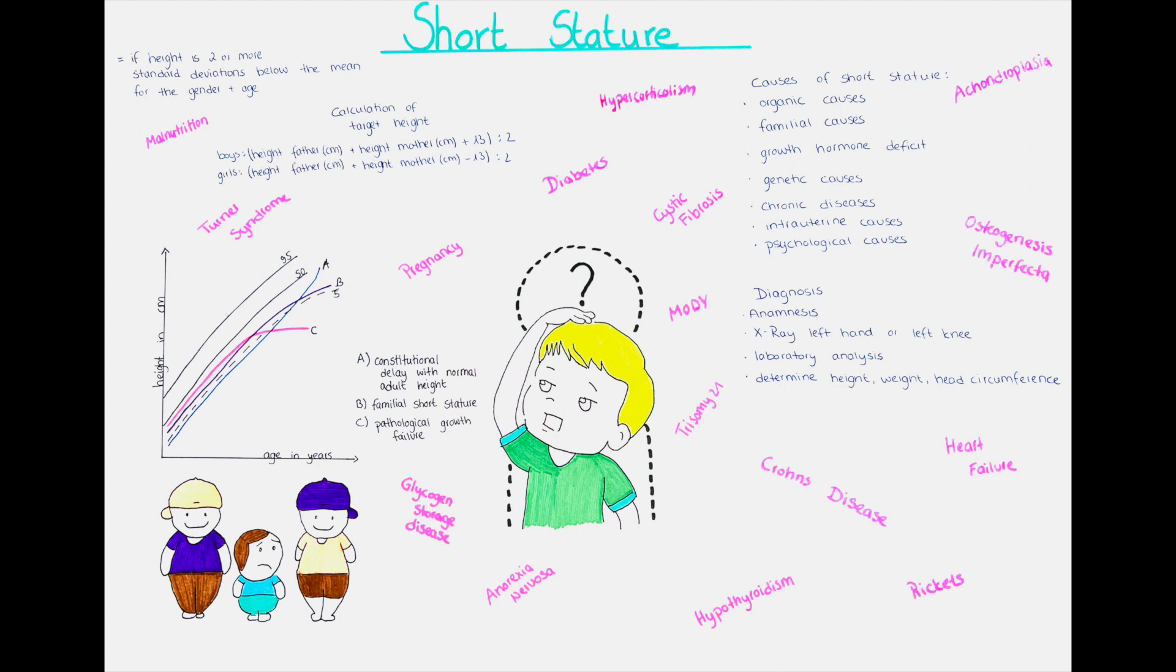Other causes include cystic fibrosis, metabolic diseases as glycogen storage disease or psychiatric diseases as for example anorexia nervosa. If you want to know more about eating disorders, you can see the video on that in our pediatrics playlist as well. Also nutritional deficiencies can cause a disruption of the normal growth in the child. Also to this topic we have a separate video.